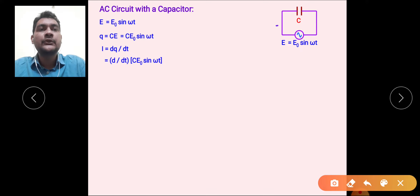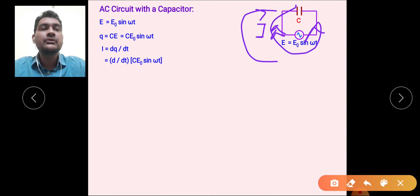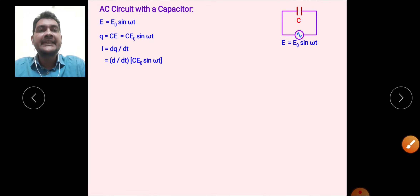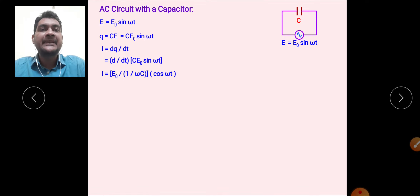Between 0 to T/2, charge flows in one direction, so current flows in that direction. Between T/2 to T, charge flows in the reverse direction, so current changes polarity. The current in the circuit is given by dq/dt, where q = Ce₀ sin(ωt). Differentiating, Ce₀ is constant, and the derivative of sin(ωt) gives cos(ωt) multiplied by ω.